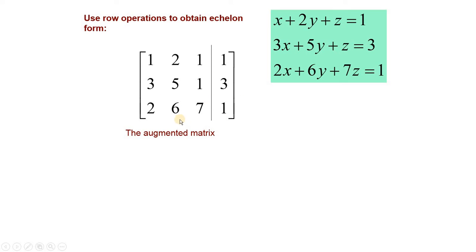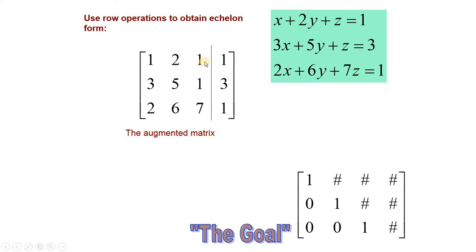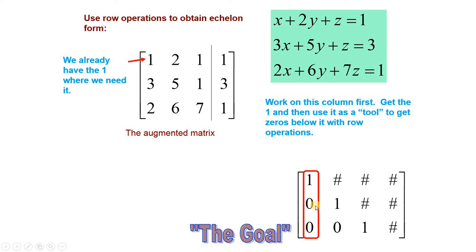ہمارا target یہ ہے کہ ہم نے یہاں پہ one لانے ہیں اور three, two اور six کو zero کرنا ہے۔ اس کے لئے ہم elementary row operations use کرتے ہیں۔ ہمارا goal اسی matrix کو اس form جیسا بنانا ہے — یہاں پہ one لانے ہیں، یہاں پہ zero لانے ہیں۔ سب سے پہلے اسی column پہ کام کریں گے — یہاں پہ one already موجود ہے، لہٰذا اسی three کو zero بنایا جائے گا۔